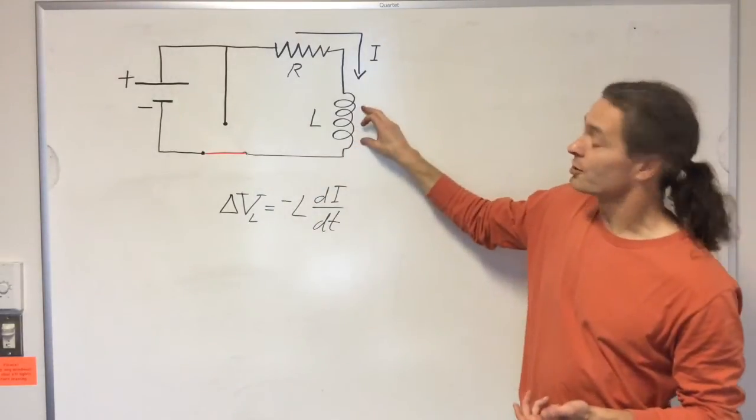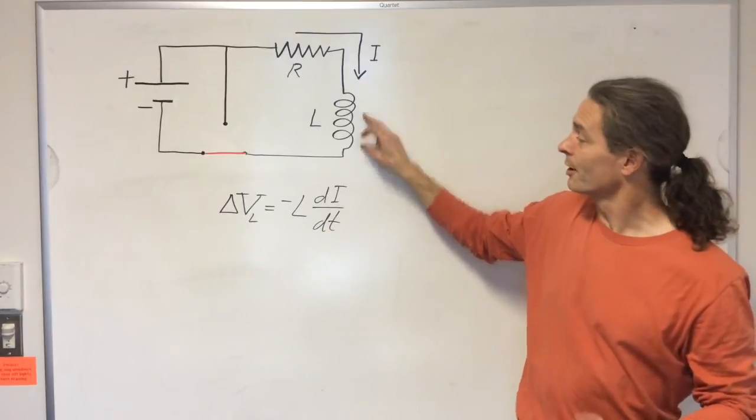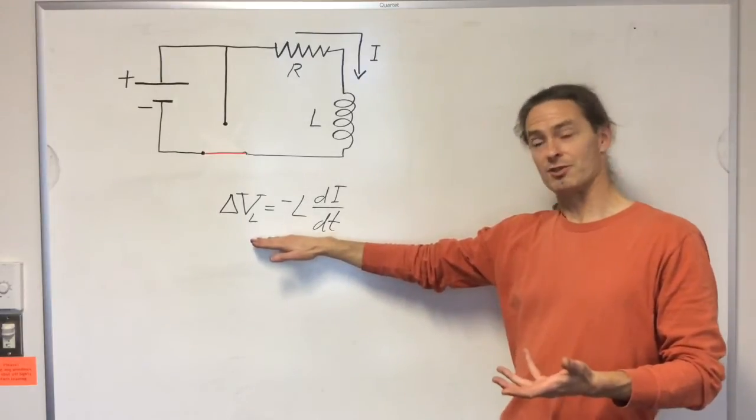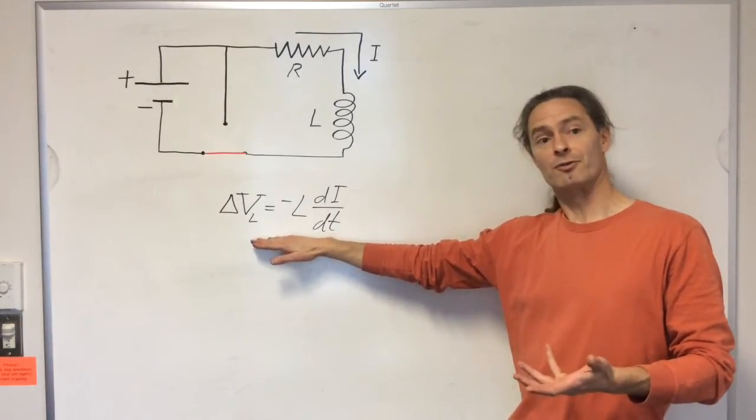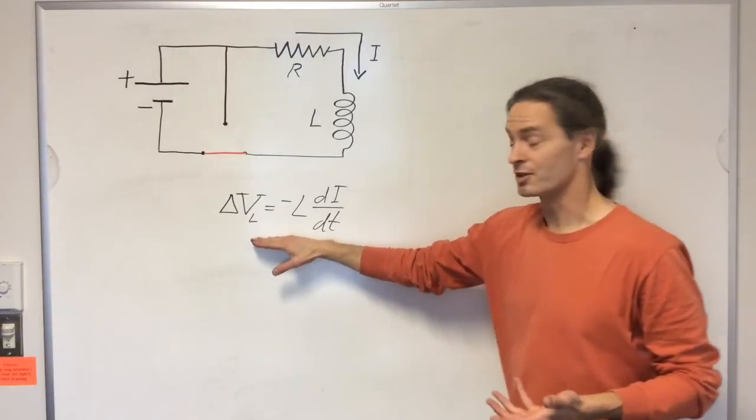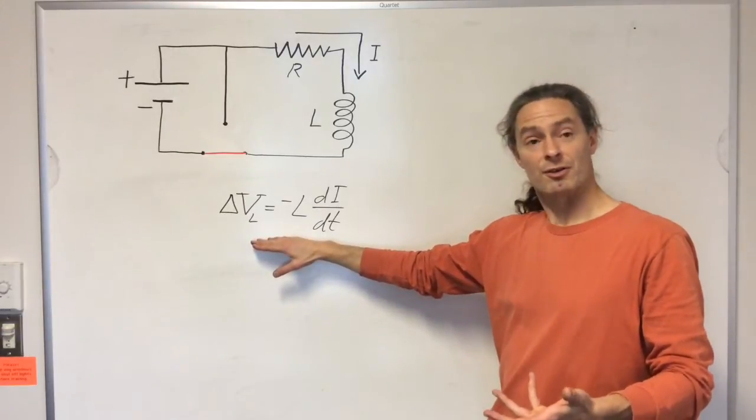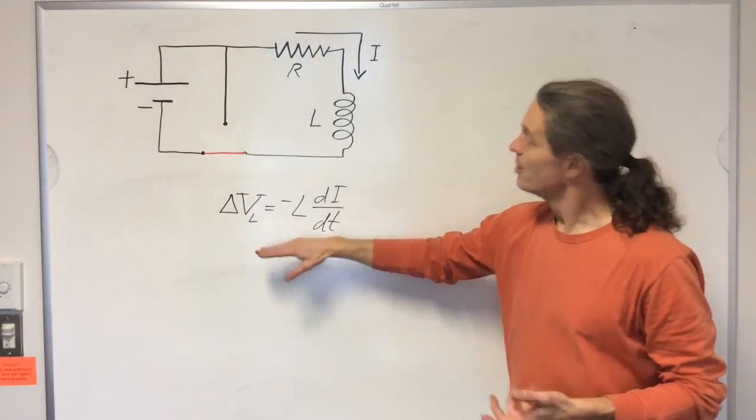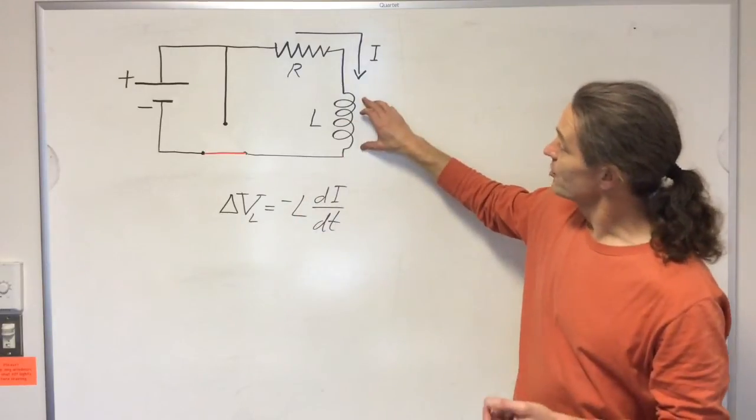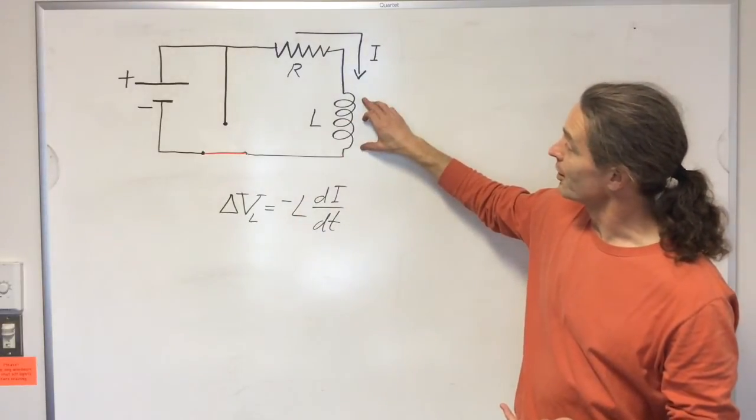Now initially the inductor is going to oppose the current due to the potential difference across the inductor that follows from Faraday's law of induction and the definition of inductance. We won't go into those details right here in this video, but the idea is basically that initially the inductor is opposing this current.